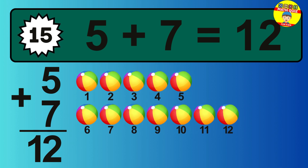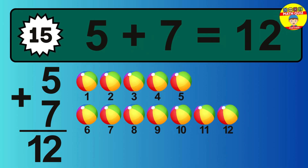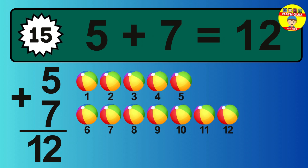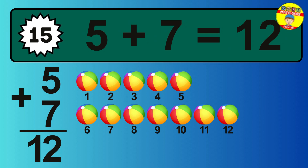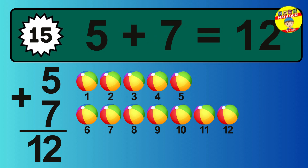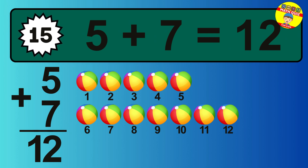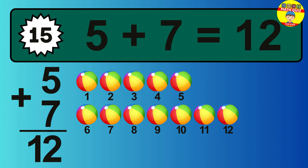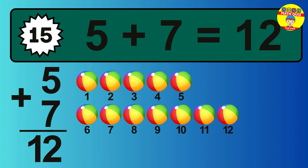Question 15: 5 plus 7 equals what? So the answer is 5 plus 7 is 12. Let's count it: 1, 2, 3, 4, 5, 6, 7, 8, 9, 10, 11, 12.